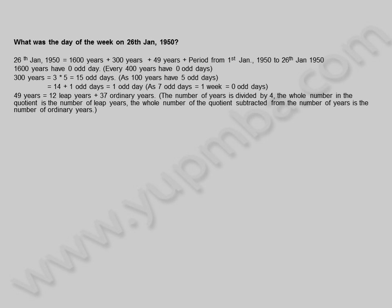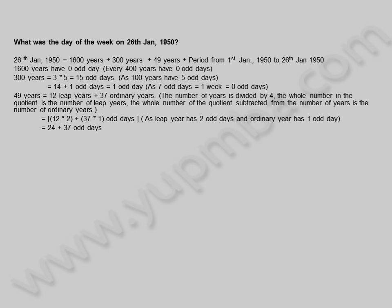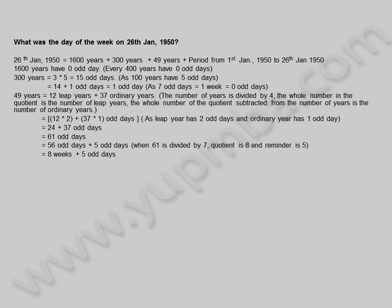49 years is equal to 12 leap years plus 37 ordinary years. The number of years is divided by 4; the whole number in the quotient is the number of leap years, and that subtracted from the number of years gives the number of ordinary years. This equals 12 into 2 plus 37 into 1 odd days, since a leap year has 2 odd days and an ordinary year has 1 odd day. That equals 24 plus 37 equals 61 odd days. When 61 is divided by 7, the quotient is 8 and remainder is 5, giving 5 odd days.